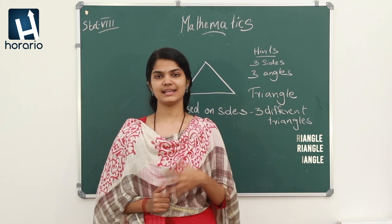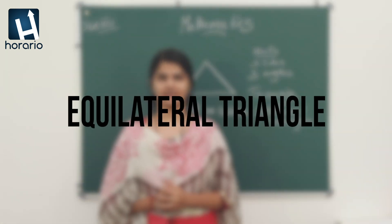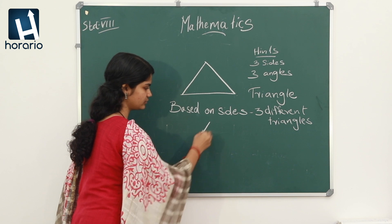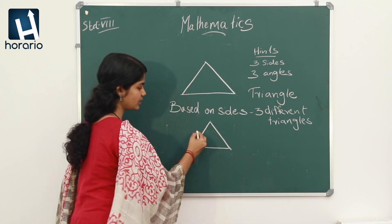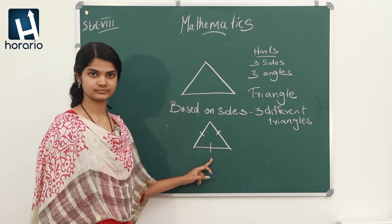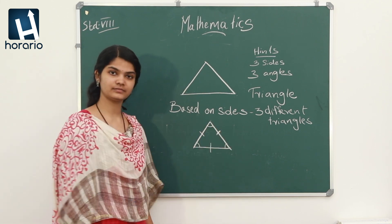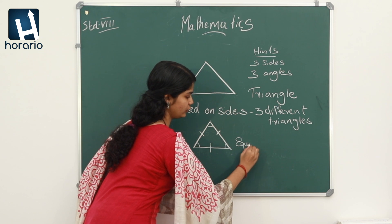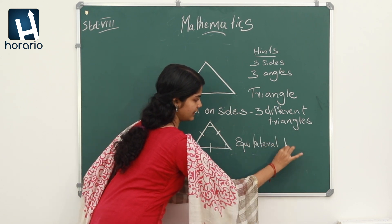First of all, let's discuss what we mean by equilateral triangle. If for a triangle, three sides are equal and three angles are also equal, we say it is an equilateral triangle.